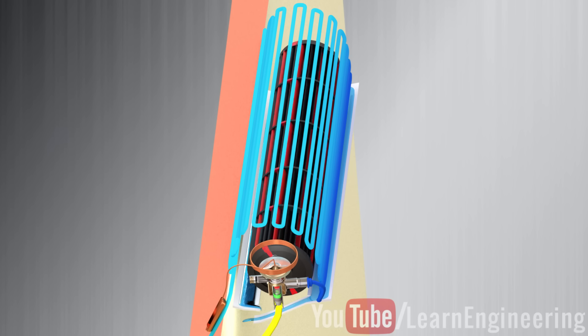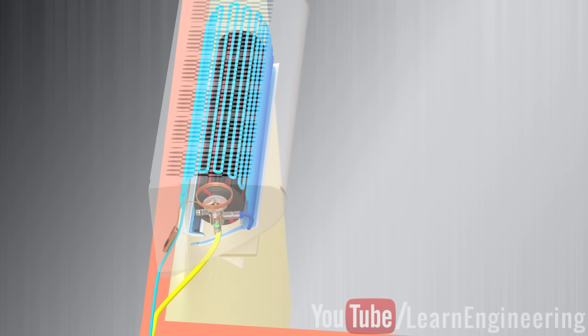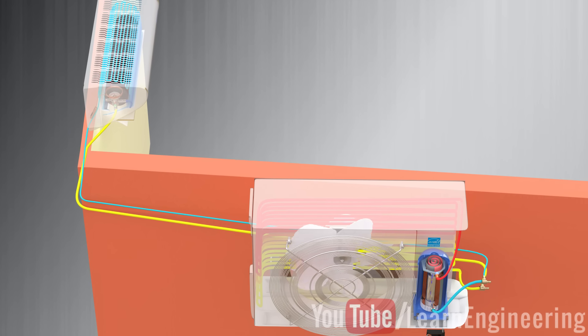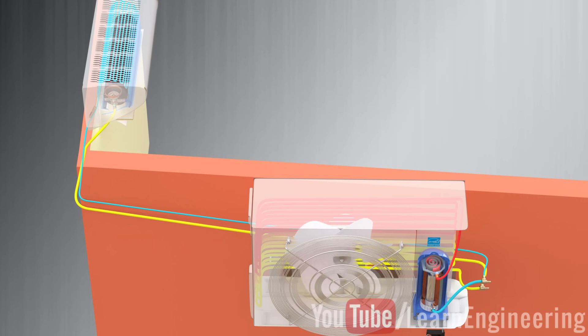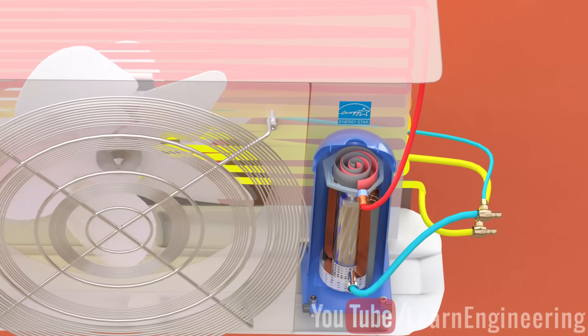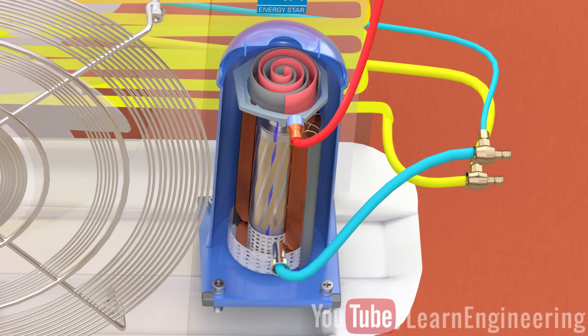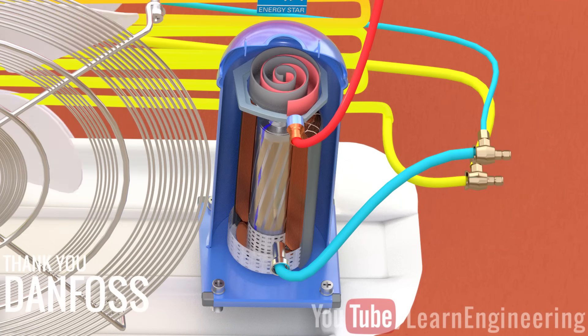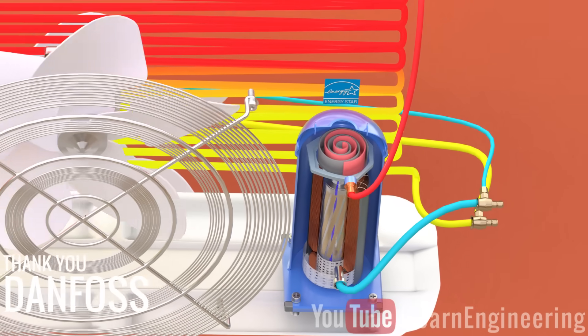Let us clear up a common misconception at this stage. TXVs do not control the room temperature. They just make sure that the compressor receives the refrigerant in pure vapor form. The refrigerant flow rate and the room temperature are controlled by the speed of the compressor. Due to their simplicity and efficiency, TXVs are widely used in the industrial and domestic applications.